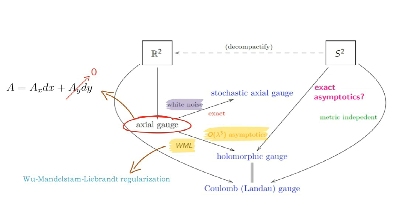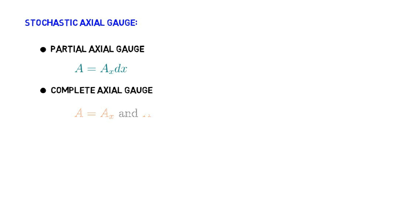Namely, we can use white noise analysis to obtain a different set of Feynman diagrams for Wilson loop expectations in axial gauge, the result of which I call stochastic axial gauge. In fact, there are two different ways of doing this, partial axial gauge and complete axial gauge. In my most recent paper, I establish the equivalence between these two gauges and equality with the exact lattice expectation.